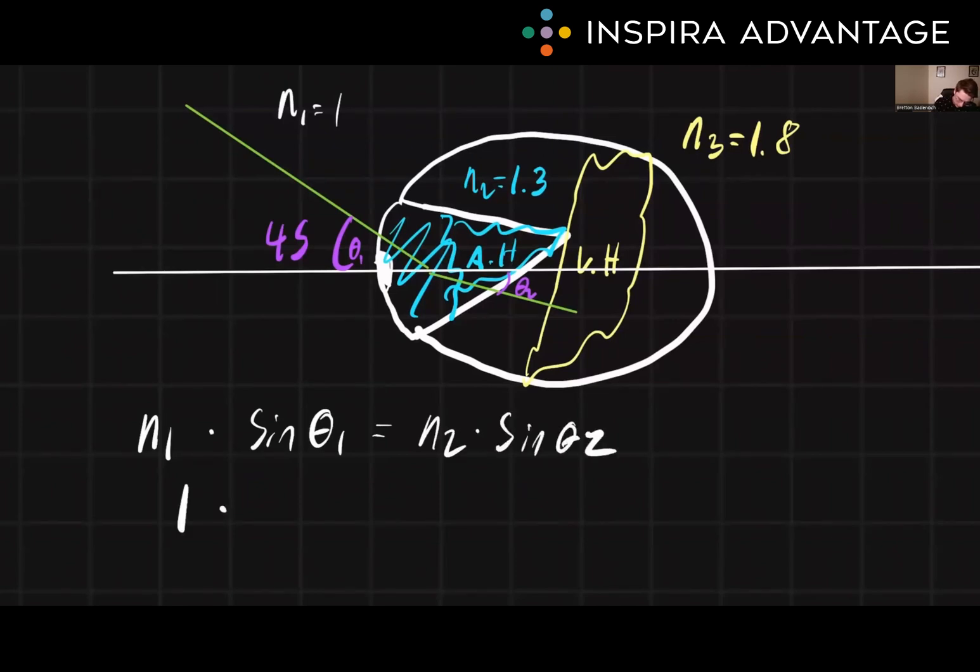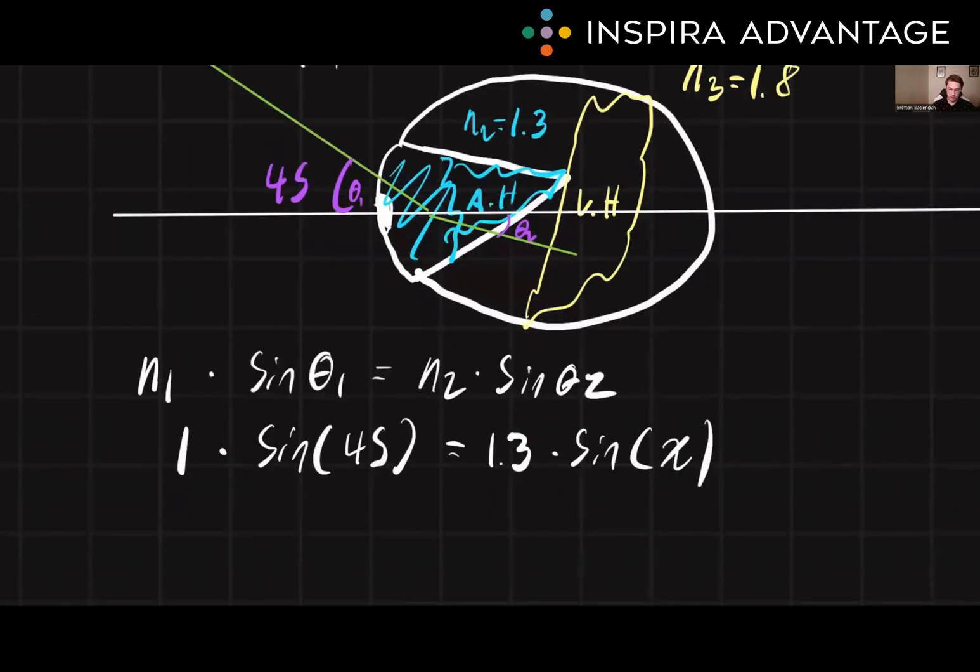Our n1 is 1 times the sine of 45 degrees equals n2, which we know is 1.3 times the sine of x. We're trying to solve for x or theta 2. So if we solve this, we see that the angle of refraction is going to be 41.18 degrees.